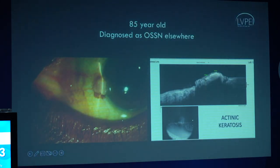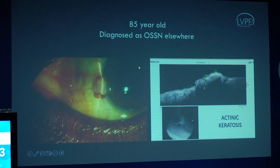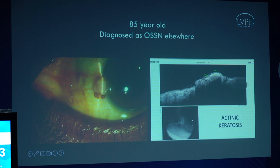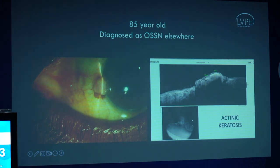Contrast this with the clinical image of an 85-year-old male who was diagnosed as OSSN elsewhere. If you look at this OCT carefully, you will see that although there is some undulation, there is no hyperreflectivity nor is there transition of the epithelium from the adjacent cornea. So this patient was ultimately a case of actinic keratosis.